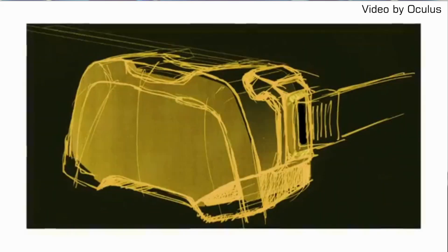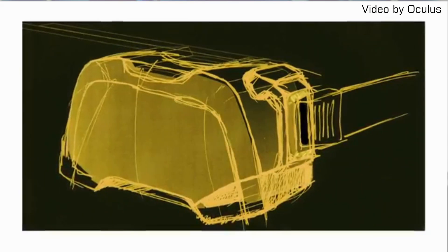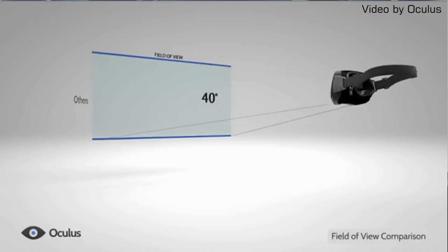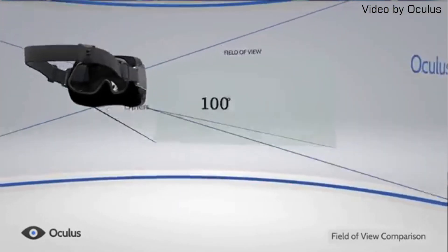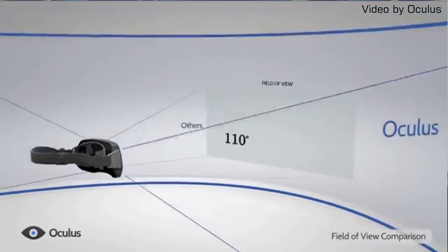The Oculus Rift is aimed toward a specific group of people — not a general audience — more for people who want a gaming sort of environment in their virtual reality experience. The Oculus Rift can also track your head using an external camera, and you can use a controller, but aside from that it's a pretty limited experience in terms of what you can do with your body.